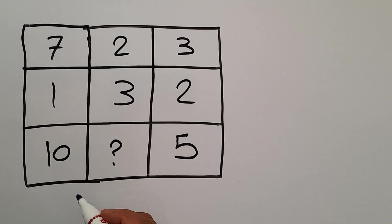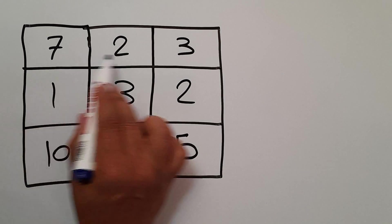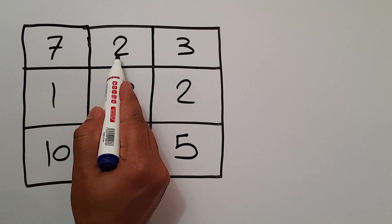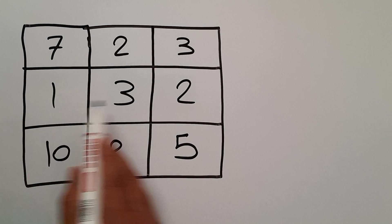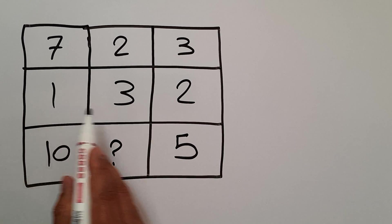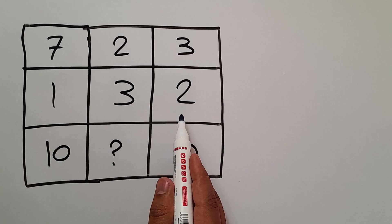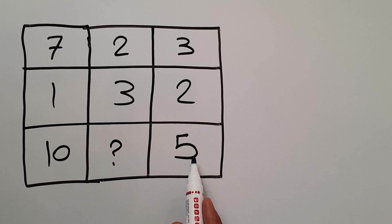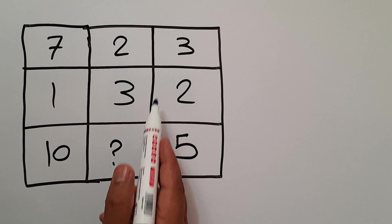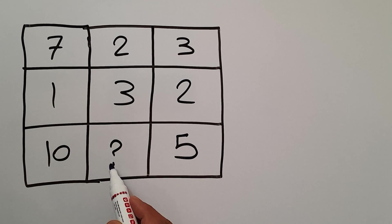Hey guys, welcome to Puzzle Joy. In this video we have a 3x3 matrix. In the first row we have 7, 2, and 3. The second row has numbers 1, 3, and 2, and in the third row we have 10, question mark, and 5. Our goal is to find the pattern that exists here and calculate the missing number.